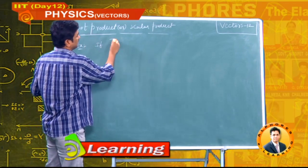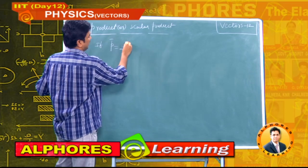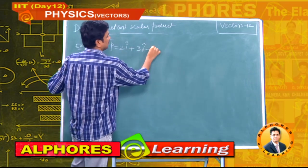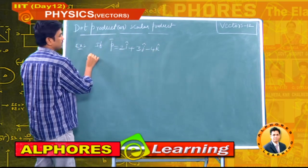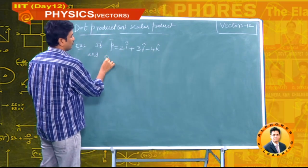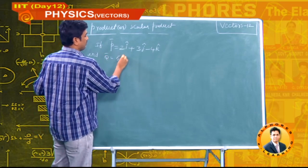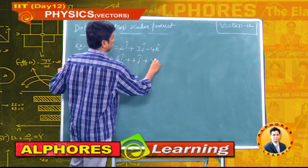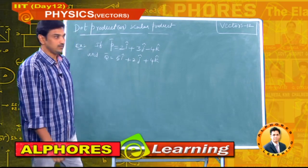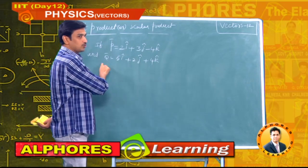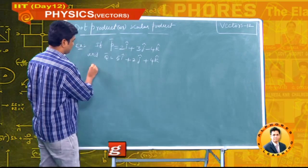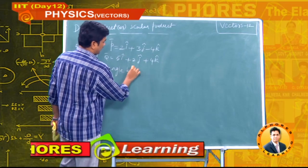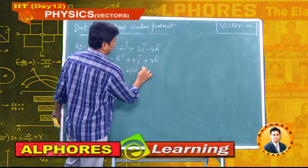If p̄ is equal to 2î + 3ĵ − 4k̂ and q̄ is equal to 5î + 2ĵ + 4k̂, they are asking us to calculate the angle between p̄ and q̄.